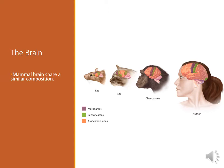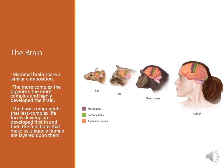All mammals share a similar composition. You'll see there are motor and sensory areas, and then association areas. This is a simplified version of the brain. You'll also notice that as animals become more complex — from rat to cat to chimpanzee to human — there are greater association areas. The basic components that less complex life forms develop are developed first in humans. So things like your brainstem and your limbic system develop first, and things like your prefrontal cortex, your decision maker, come later in formation.